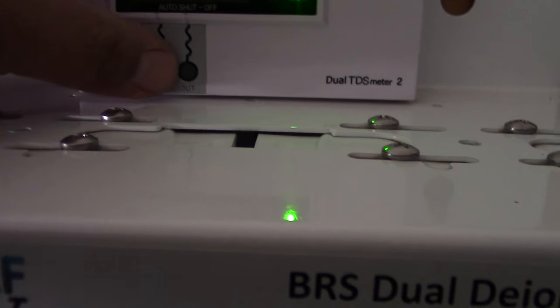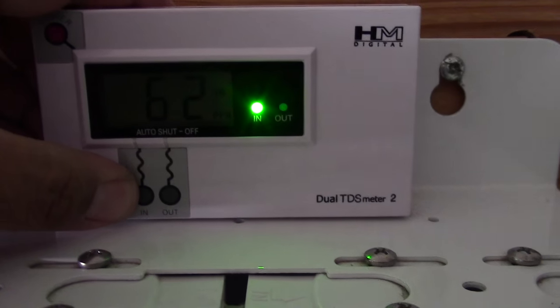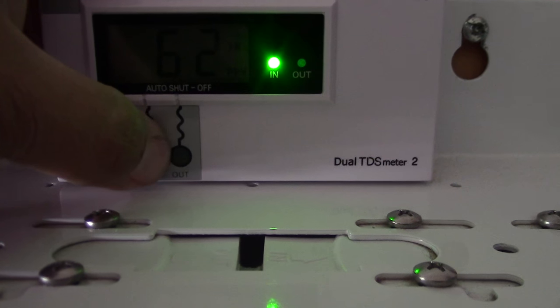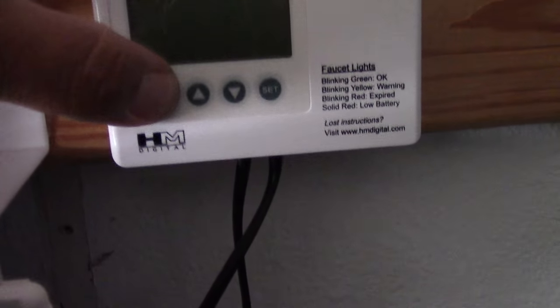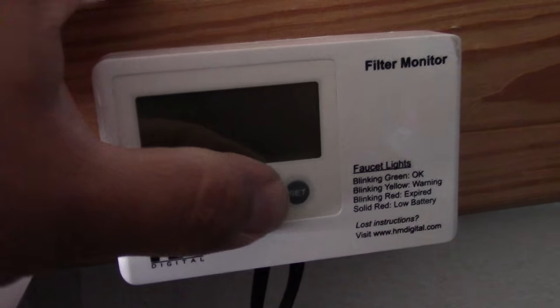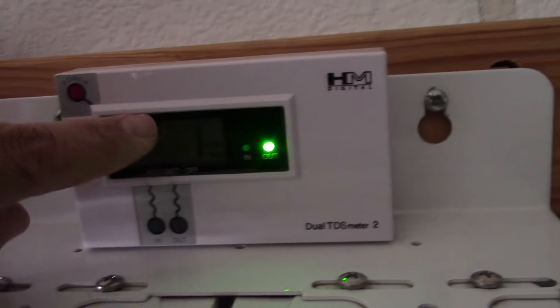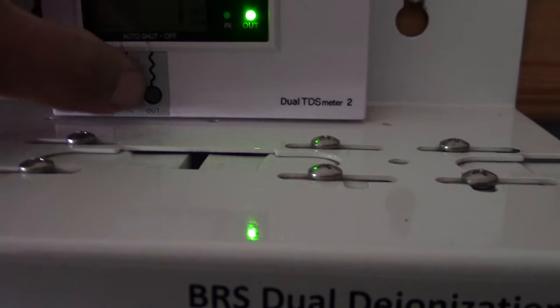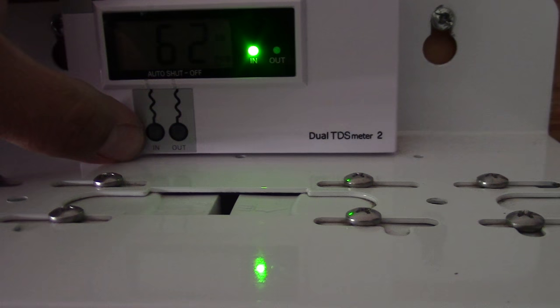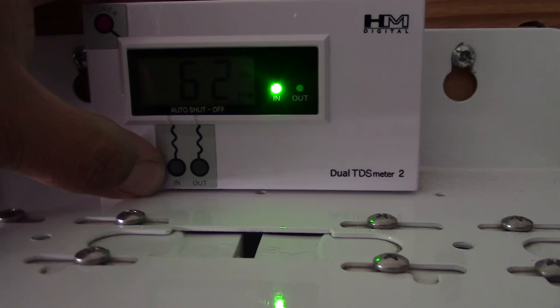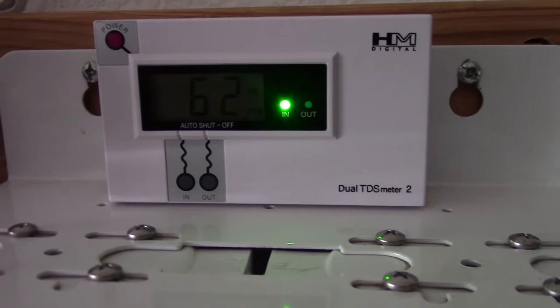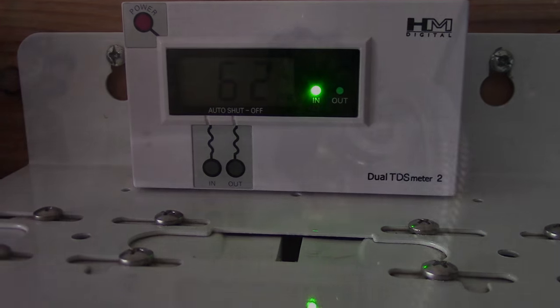This right here is the TDS meter. It'll tell you your reading coming in and it'll tell you the reading once it goes out through the RODI system. This piece right here, the filter monitor, is pretty much worthless because I haven't even been using it, but the TDS meter is the most important part for you to pay attention to.